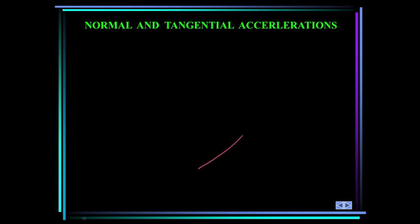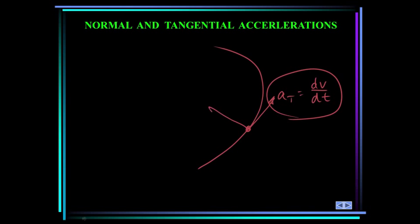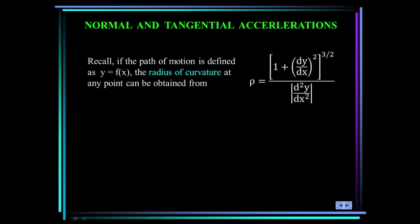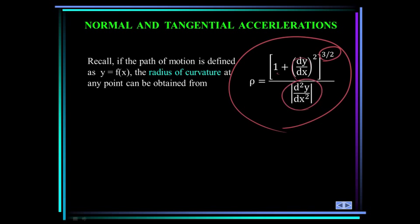Say you borrowed your uncle's Porsche and took it to Watkins Glen — you're traveling around the racetrack. The tangential acceleration is your rate of change of speed with respect to time. As you press the accelerator or brake going around the track, your velocity is changing, and that rate of change is the tangential acceleration. The normal acceleration points towards the center of curvature and is a function of velocity: v squared over rho, where rho is the radius of curvature. Recall if the path of motion is a function of x, you can determine the radius of curvature using: rho equals (1 plus (dy/dx)²) raised to the 3/2 power, divided by the second derivative of y with respect to x.